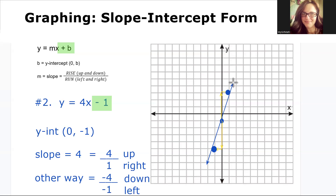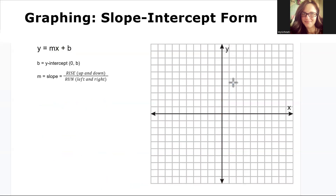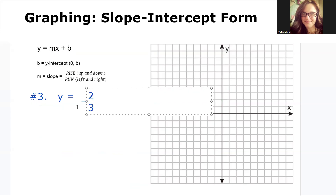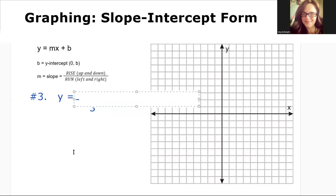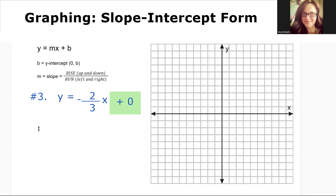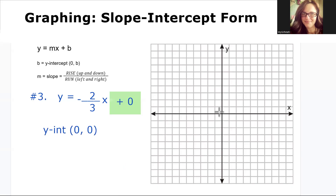Let's do one more example. Number three — let's graph the line y equals negative two-thirds x. What is the y-intercept of this equation? Our y-intercept is zero. So we can start with our y-intercept and graph that point.